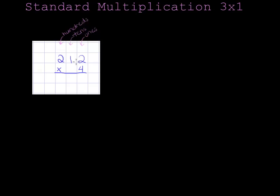So our three-digit number is 212, and our one-digit number is 4. You always start by multiplying the ones place first. So 4 times 2 is 8, and I will write that in the ones column.